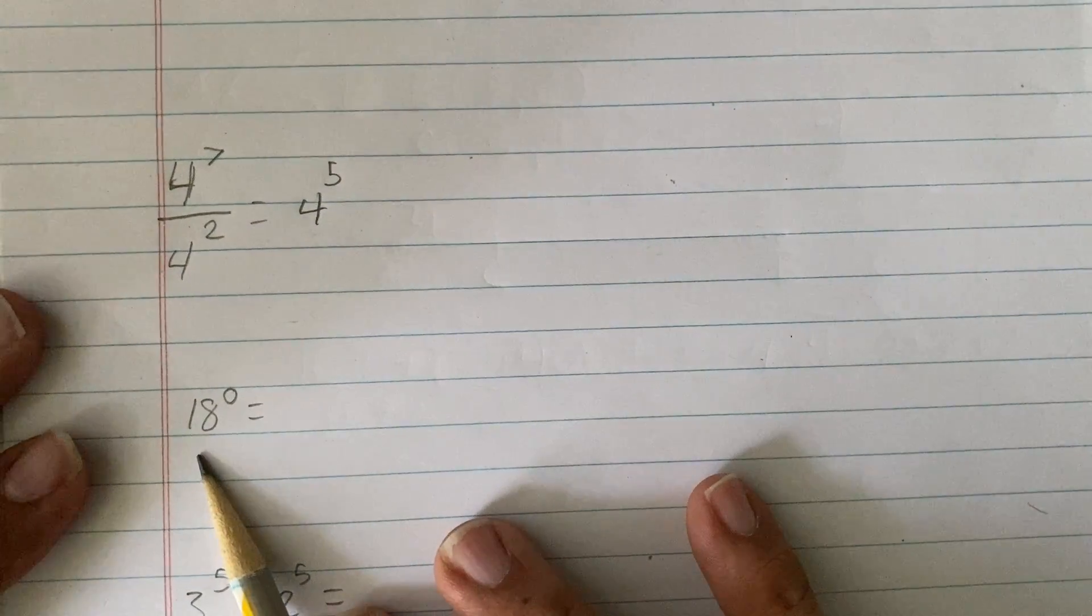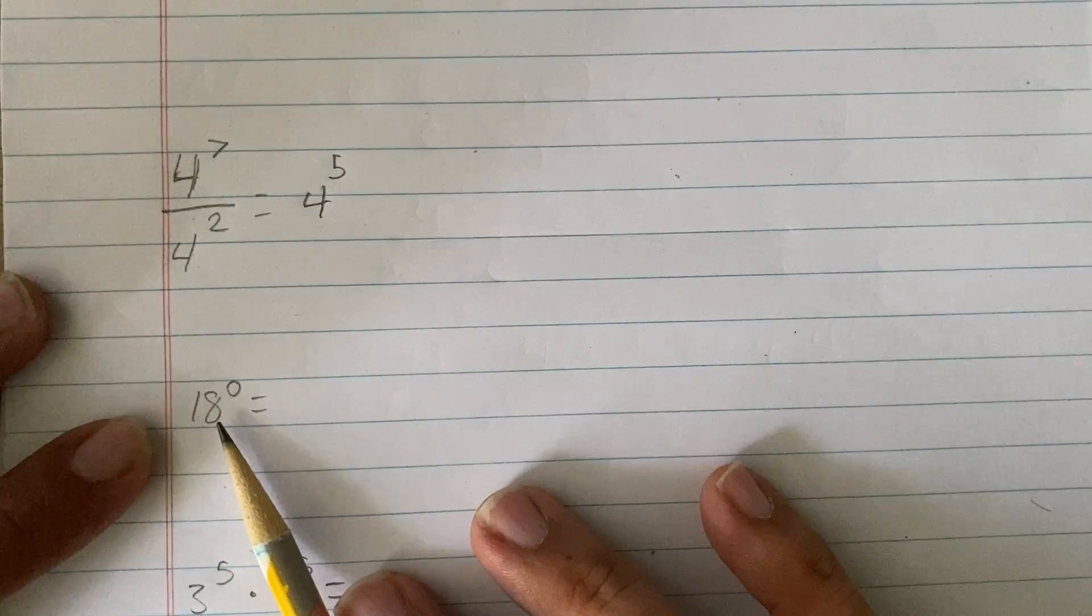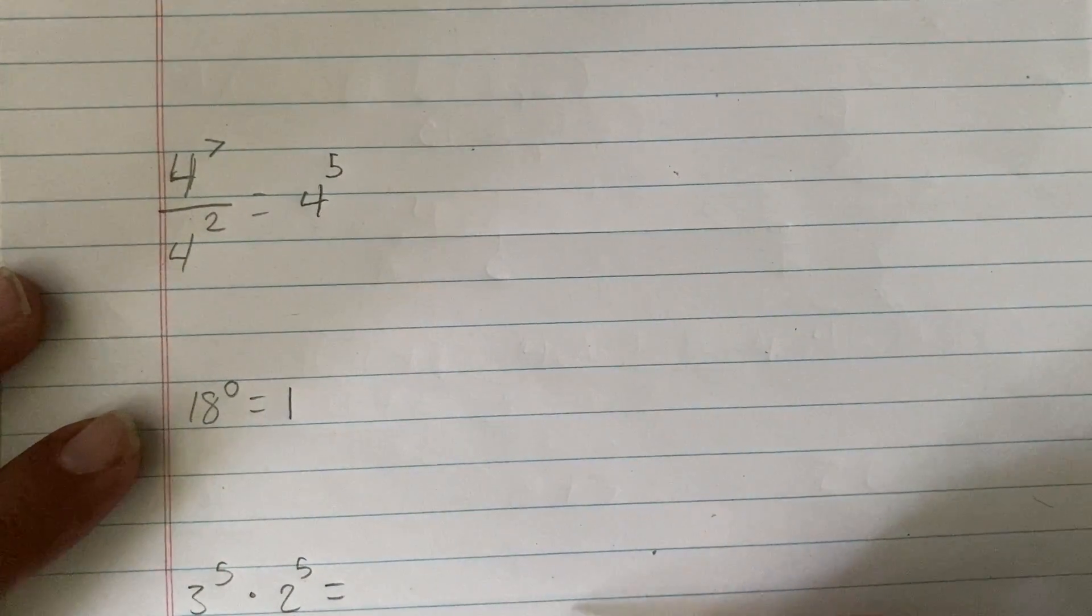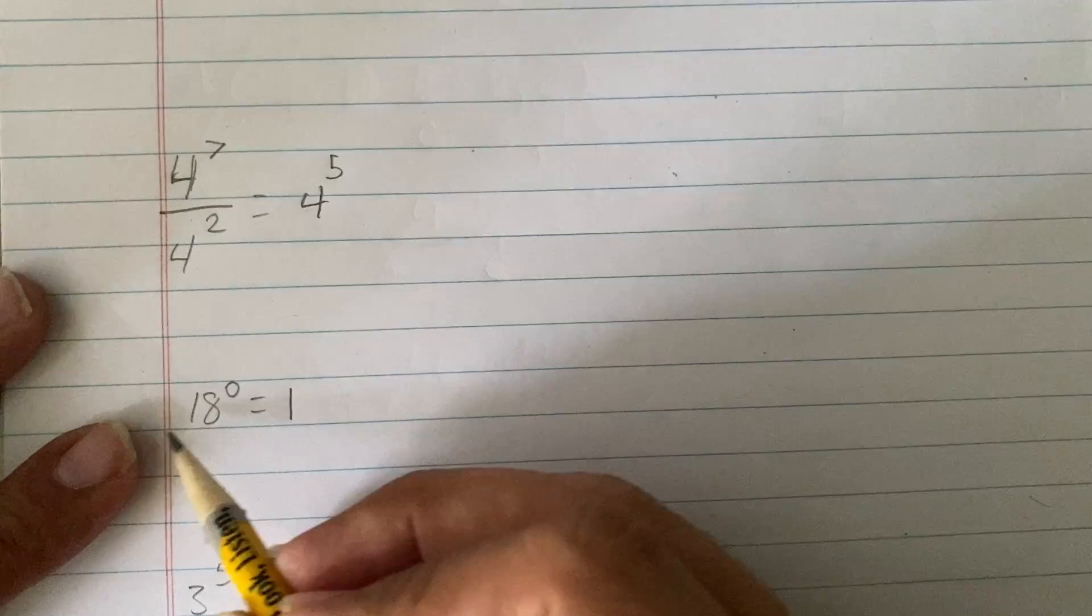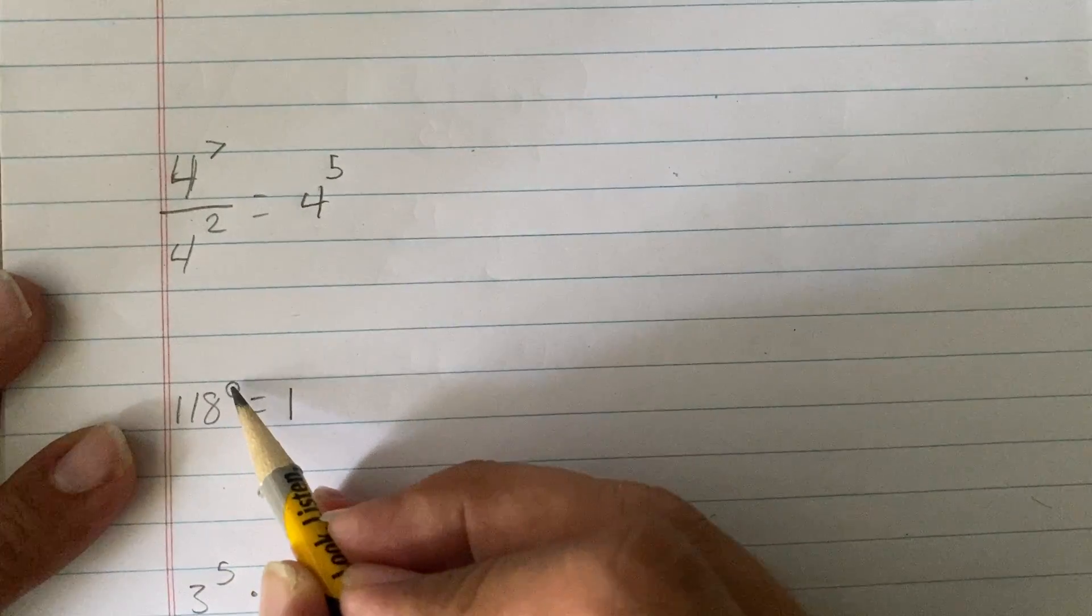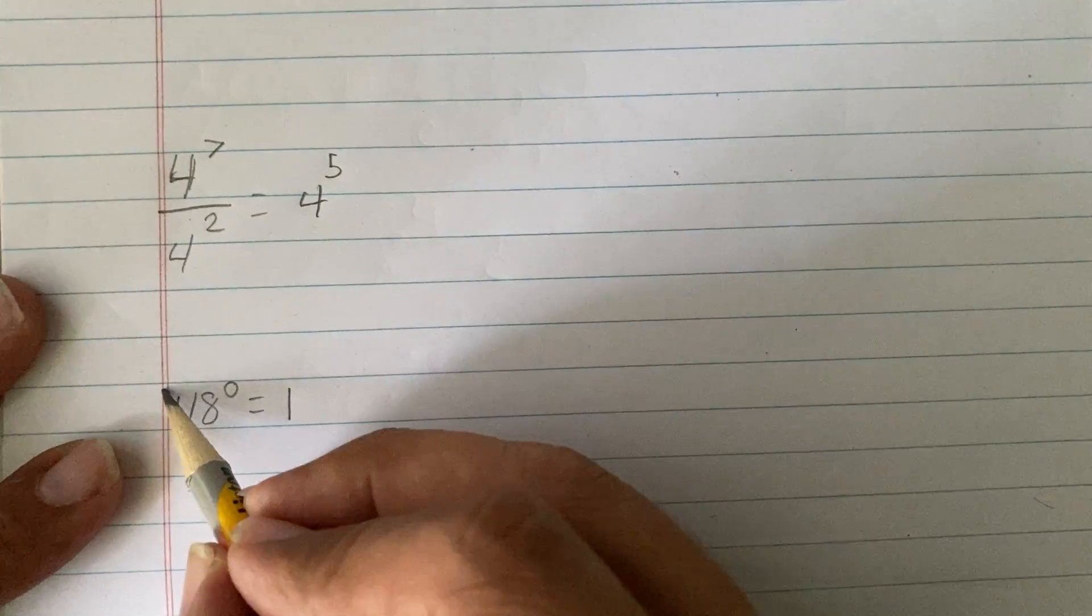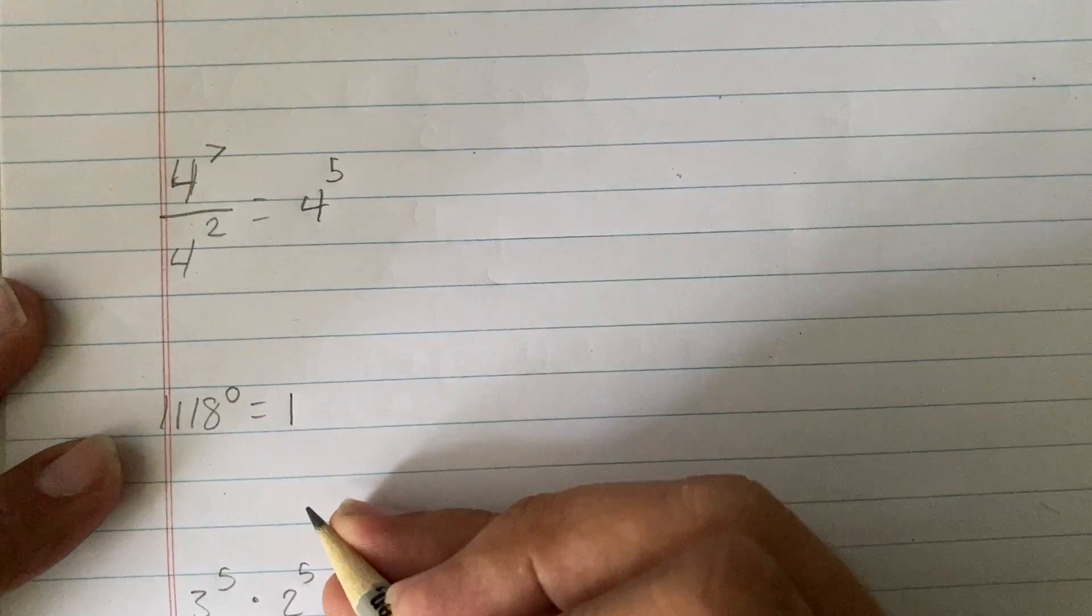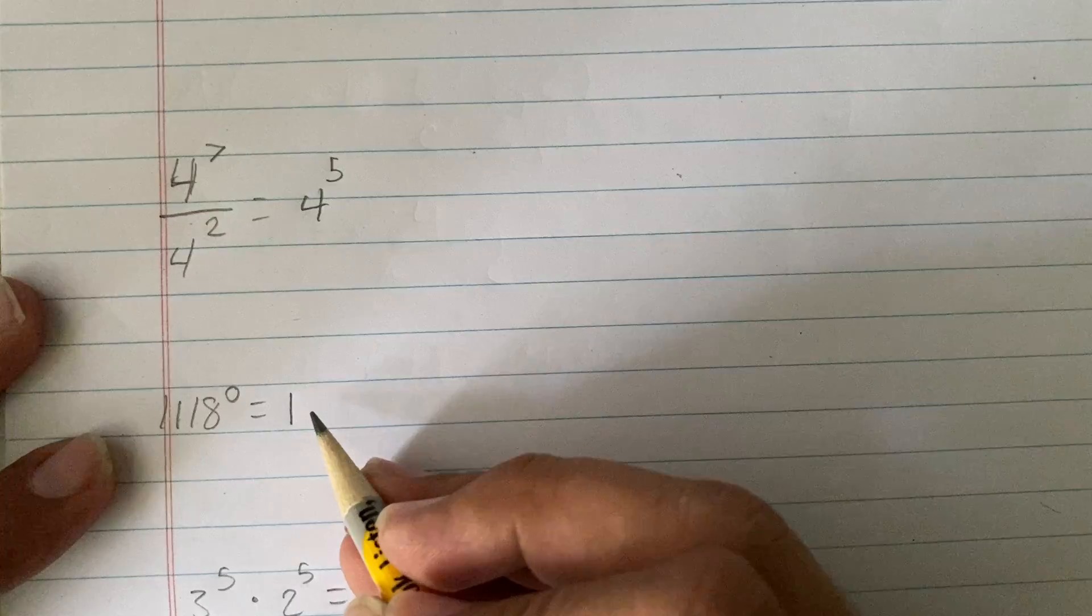Now, anything to the power of 0, except for 0, anything to the power of 0 is 1. So, 18 to the power of 0 is 1. 118 to the power of 0 is 1. So, anything to the power of 0 equals 1.